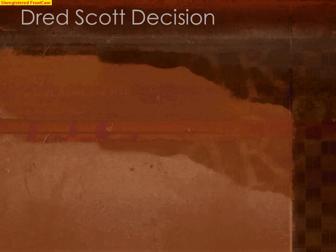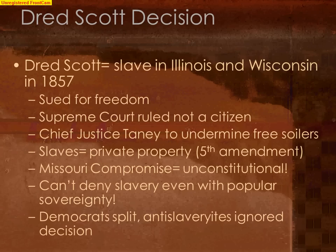Now let's look at the Dred Scott decision. In 1857, a slave named Dred Scott sued his master for his freedom, and the case was taken all the way to the Supreme Court. The basis of his lawsuit was that he had been brought by his master to the free soil states of Illinois and Wisconsin, living there for five years. He argued that based on his residency in a free soil state, he should be given his freedom. The Supreme Court was dominated by the South at this time, specifically Chief Justice Roger Taney, who was from Maryland and whose goal was to undermine the free soil cause.